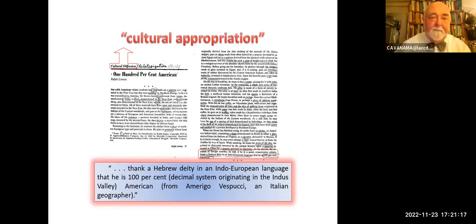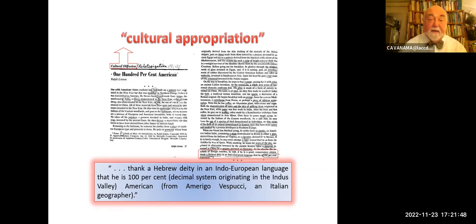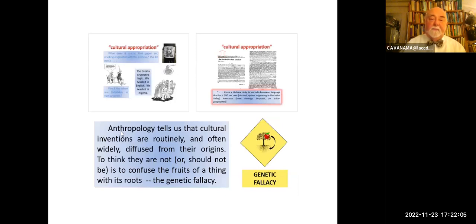Ralph Linton, an anthropologist, had a very clever essay called '100% American,' in which — in England there's a character called the Little Englander, we have them in America too, very chauvinistic — the essay goes through all the things that the 100% American does in the course of getting ready for work: puts on his necktie, which comes from Croatia; drinks coffee, which comes from tropical areas; et cetera. And then the essay ends: before he goes to work, he will thank a Hebrew deity in an Indo-European language that he is 100% American — with 'American' from Amerigo Vespucci, an Italian geographer. The point is culture is always diffused; appropriation is the default mode. This is what anthropology tells us generally. Cultural inventions are routinely and often widely diffused from their origins. To think that they are not or should not be is to confuse the fruit of a thing with its roots — the very essence of the genetic fallacy.